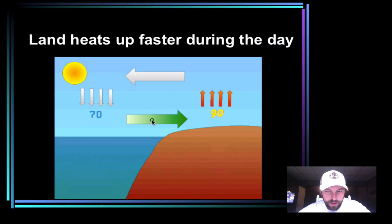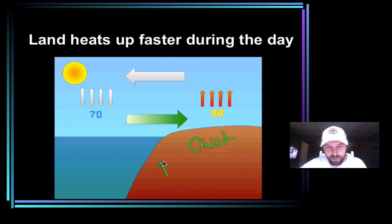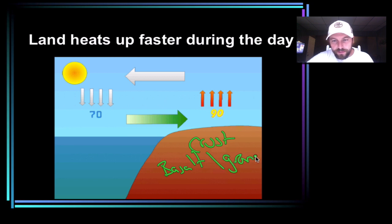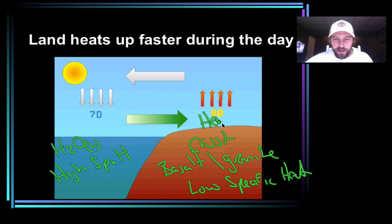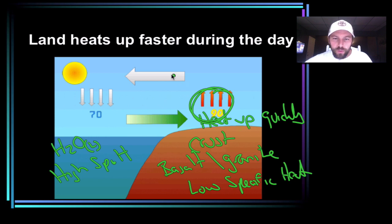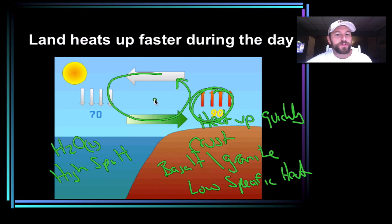What this associates with is how fast different parts of the Earth heat up. Our crust is made up of basalt and granite, which have a low specific heat, versus the water, H2O liquid, which has a high specific heat. So the land heats up quickly, and if you notice, we have this group of arrows creating what's called a convection cell. The specific heat of the Earth's surfaces helps make up convection cells within our atmosphere.